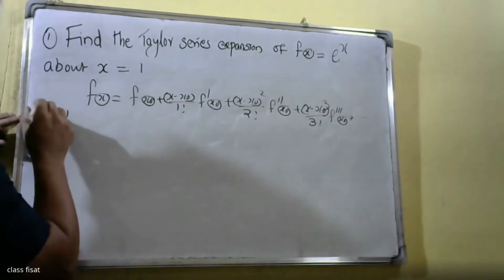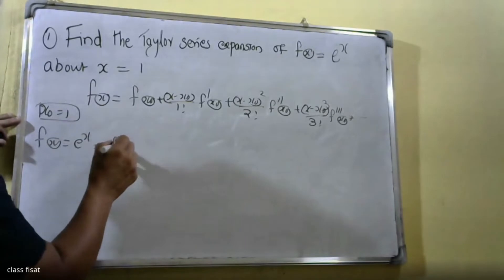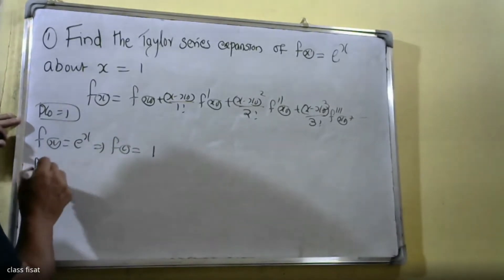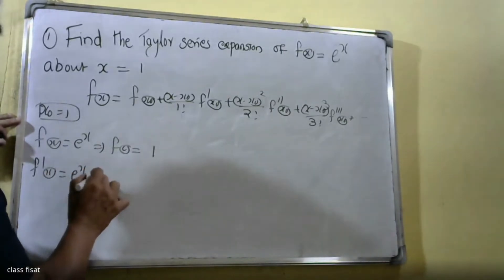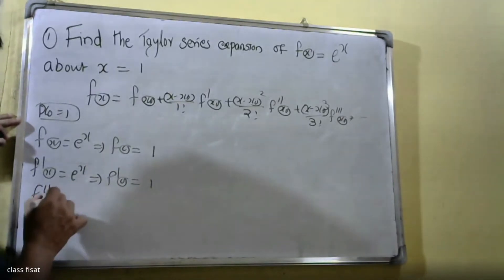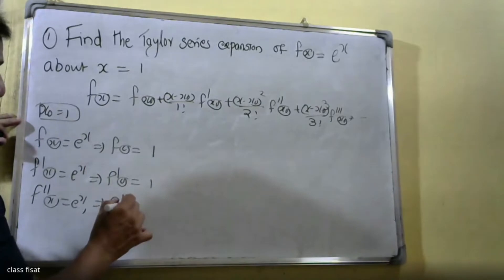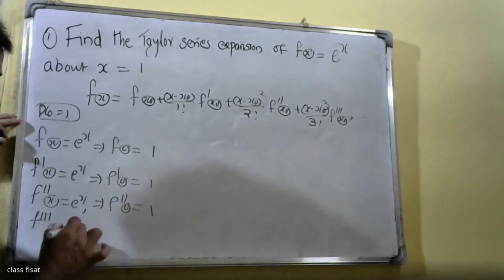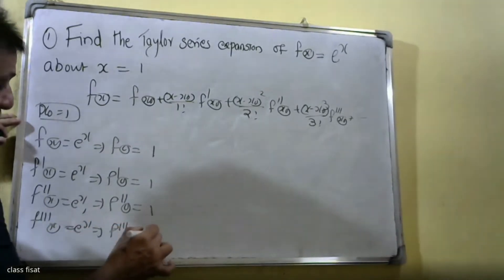Since x₀ = 1, and f(x) = eˣ, we evaluate the derivatives. f(0) = 1, f'(x) = eˣ so f'(0) = 1, f''(x) = eˣ so f''(0) = 1, f'''(x) = eˣ so f'''(0) = 1, and so on.